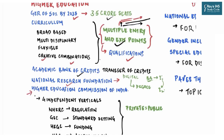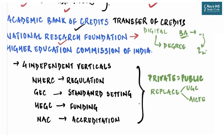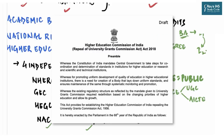The most important topic is the Higher Education Commission of India. NEP paves the way for a single overarching regulator for higher education that will replace UGC and AICTE. This single regulator — called the Higher Education Commission of India — will have four independent verticals: the National Higher Education Regulatory Council for regulation, the General Education Council for standard setting, the Higher Education Grants Council for funding, and the National Accreditation Council for accreditation. A draft bill — the Higher Education Commission of India (Repeal of University Grants Commission Act 1956) Bill 2018 — is already under consideration.